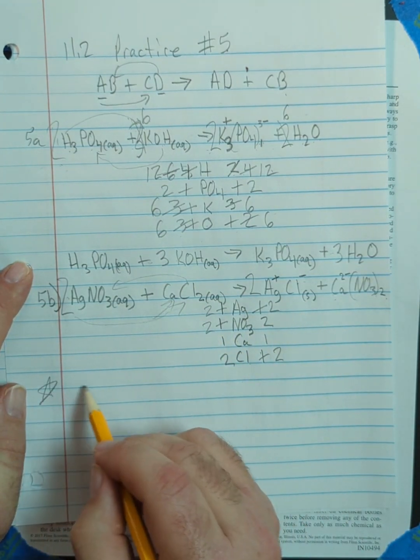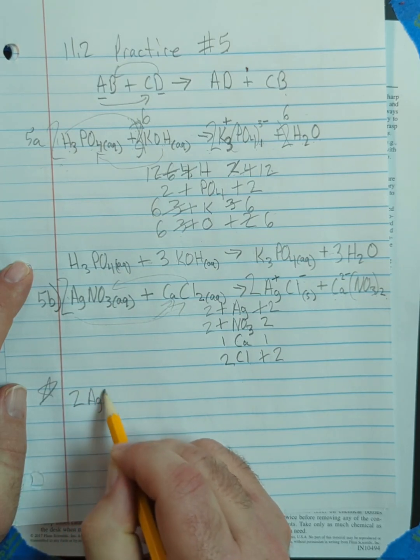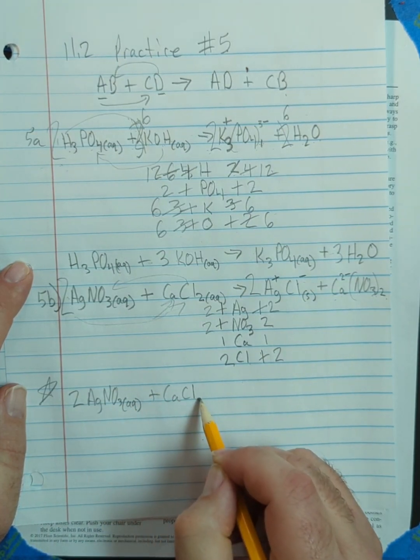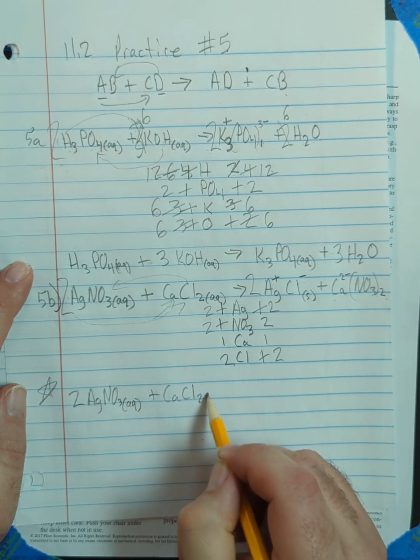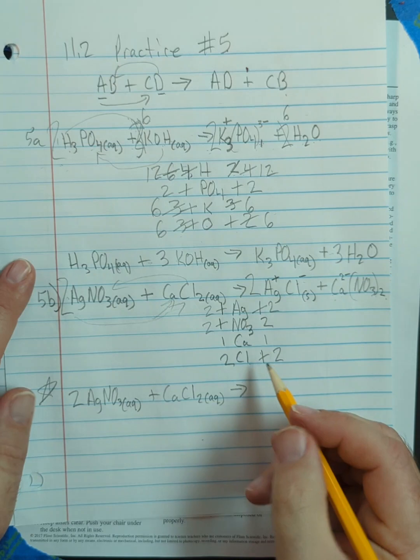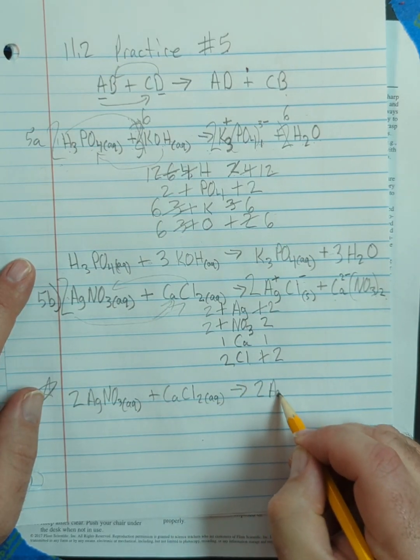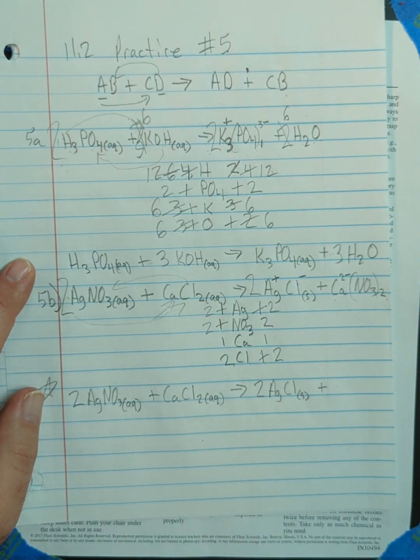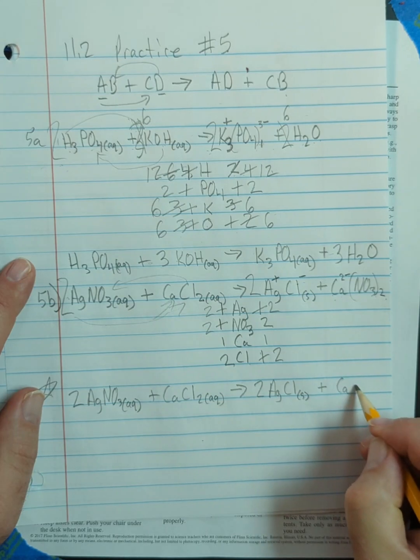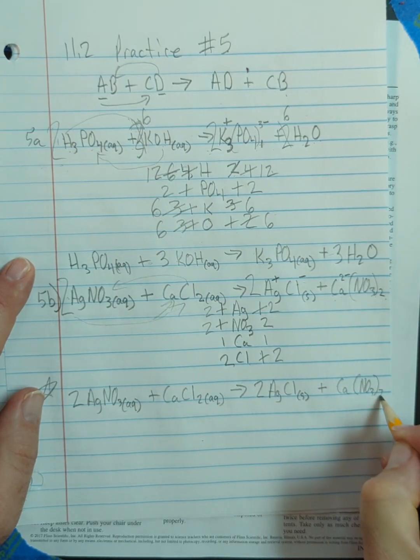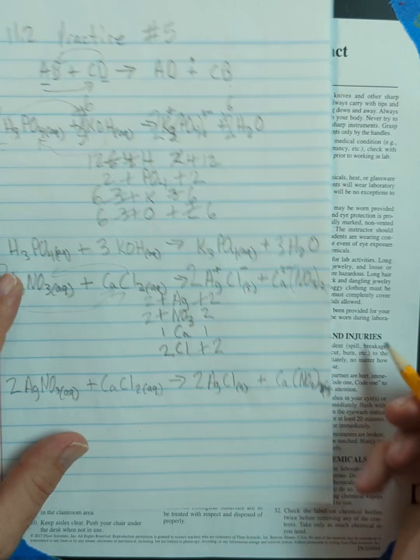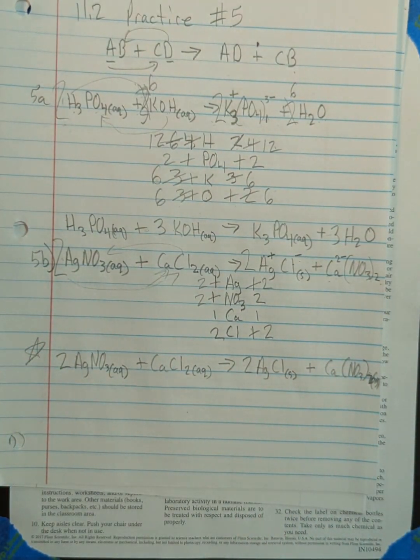So our final answer would be 2 AgNO3 aqueous plus calcium chloride aqueous produces two molecules of silver chloride as a solid precipitate plus calcium nitrate aqueous. Sorry, ran out of room there. All right. But that's practice problem number five.